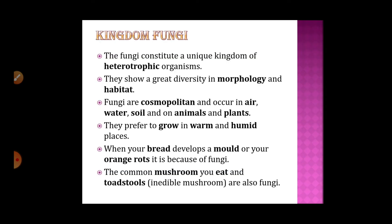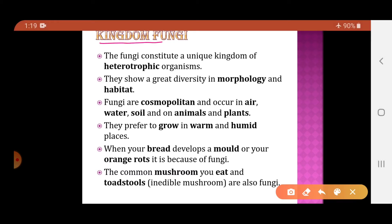We classify organisms into five kingdoms: Monera, Protista, Fungi, Plantae, and Animalia. We have already studied the first two kingdoms in detail. The first was Monera, which included prokaryotic unicellular organisms, and the next was Protista, which included eukaryotic unicellular organisms. Today we will study in detail the next kingdom — the kingdom Fungi.